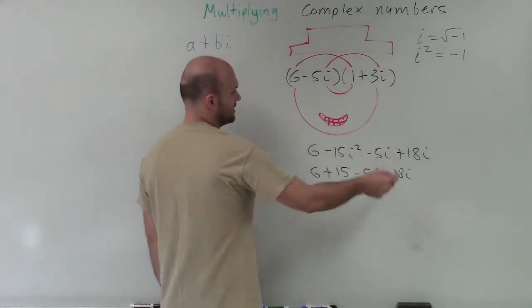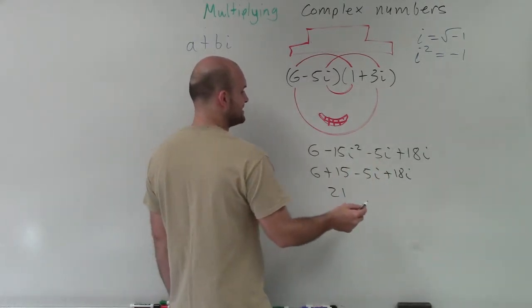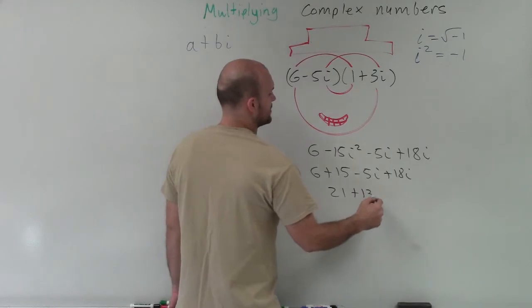Well, 6 plus 15 is 21. Negative 5i plus 18i is going to be a positive 13i.